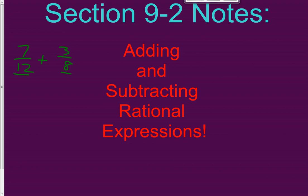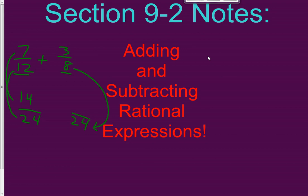The first thing we had to do when we added and subtracted fractions is we had to get common denominators. The common denominator between 12 and 8 was 24. What do we have to multiply the denominator by to get to 24? Well, we multiplied it by 2. So to make an equivalent fraction, we have to multiply the numerator by 2, so it is 14/24. We did the same thing to the other fraction — 8 times 3 got us 24, so 3 times 3 is 9/24. We kept the denominator the same and added the numerators: 14 and 9 is 23/24.